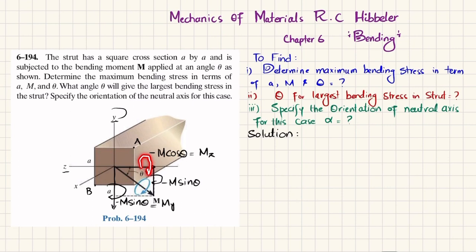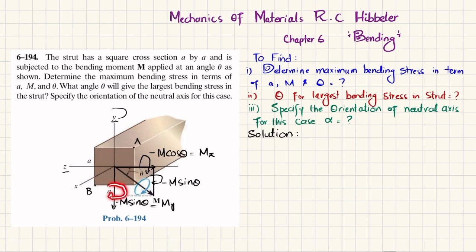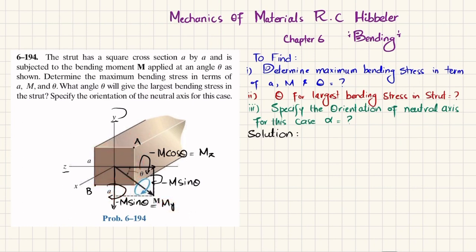Due to the moment about z, bending causes the upper portion — point A — to be in tension. Due to the moment about y, bending also occurs in that direction. So point A is the position of maximum bending stress. We write: Mz = −M cosθ and My = −M sinθ.